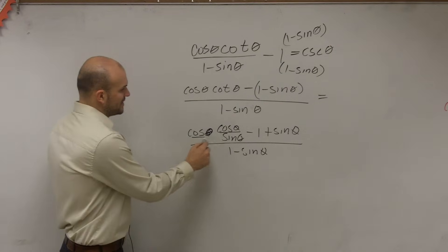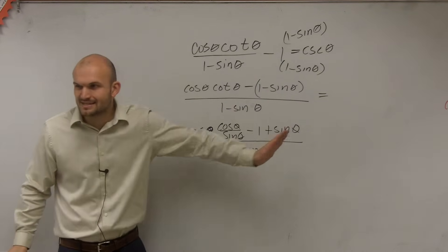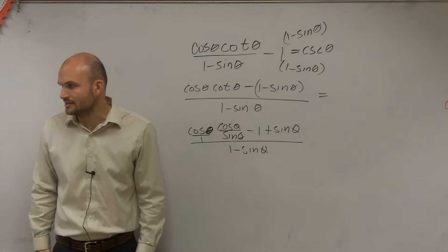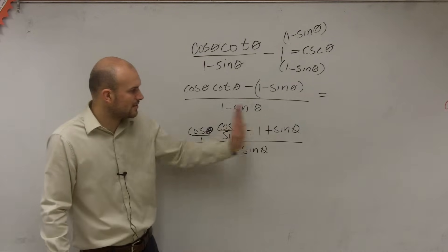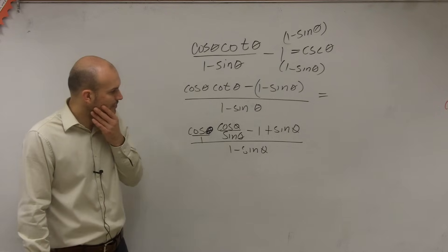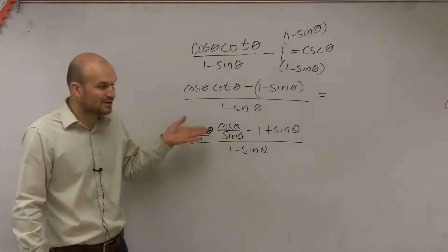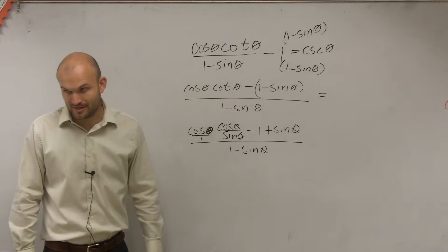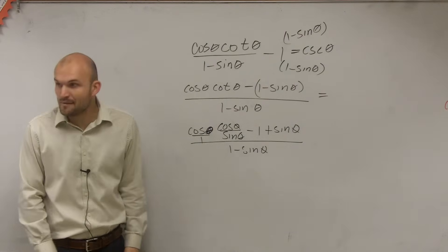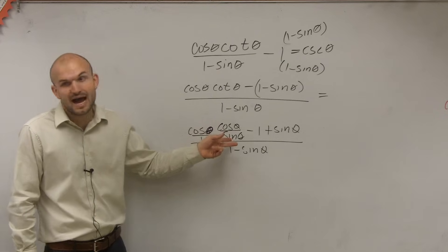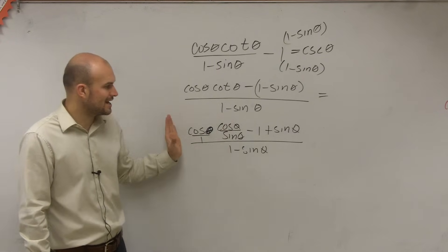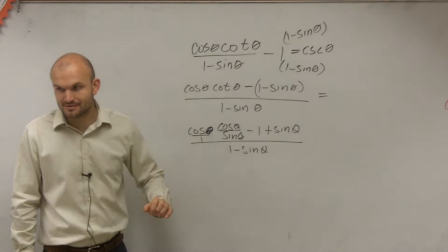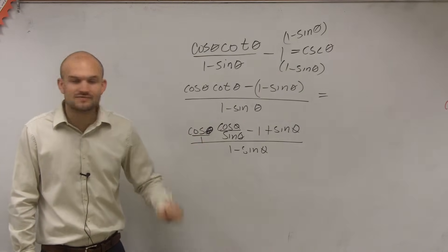Now, the reason why I would do this is because I've got to somehow simplify this numerator, right? I've got to make this look something like we're going to somehow combine all these. Now, the only way I can combine all of these is if the numerator all has the same denominators. And you can see the only denominator that I see is sine, right? So what I'm going to do is I'm going to try to combine all of these with the same denominator of sine.